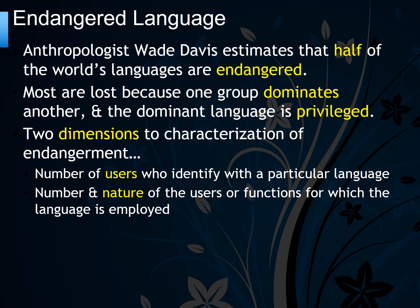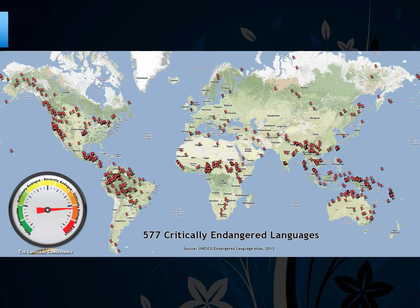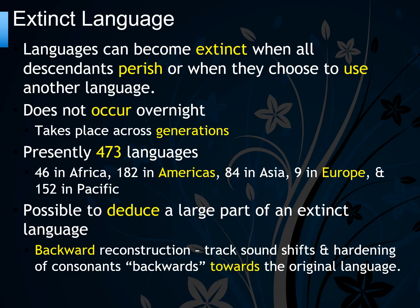Anthropologist Wade Davis estimates that half of the world's languages are endangered — most are lost because one group dominates another and the dominant language is privileged. Two dimensions of endangerment are the number of users who identify with a language and the number and nature of functions for which the language is employed.